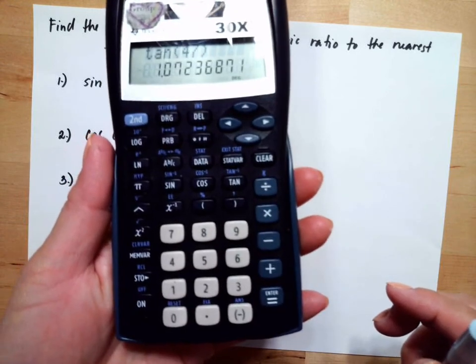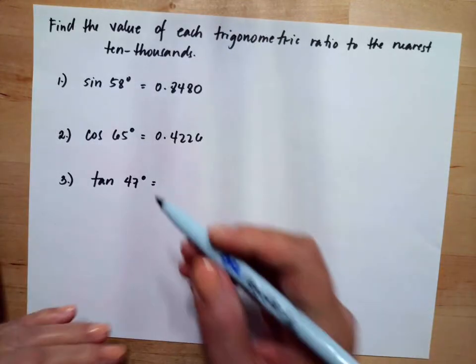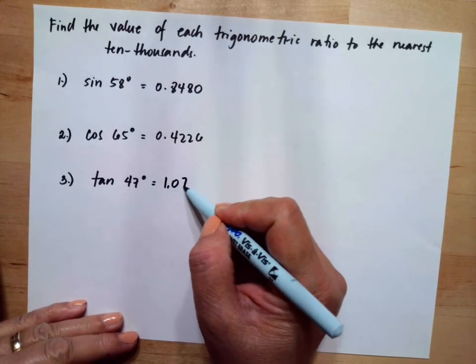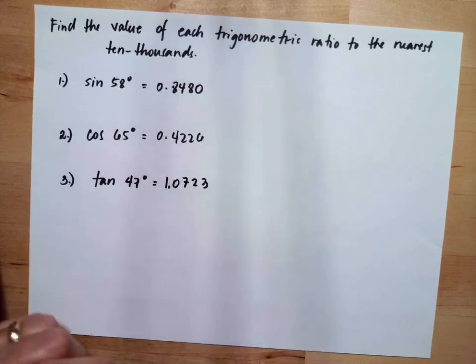You get 1.0723 up to ten-thousandth, so meaning four decimal places.